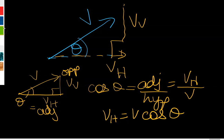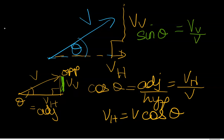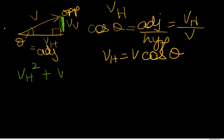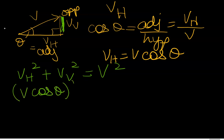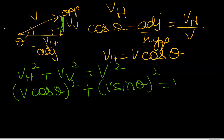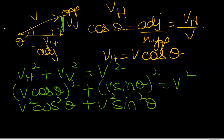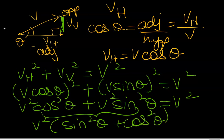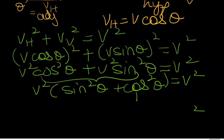Now for VV: VV is the side opposite the angle, so sine theta equals VV over V, giving VV equals V sine theta. If I combine the vertical and horizontal components through Pythagoras's theorem, I should get back V. So VH squared plus VV squared equals V squared, which gives V squared cos squared theta plus V squared sine squared theta equals V squared. Using the identity sine squared plus cos squared equals one, V squared equals V squared — confirmed.